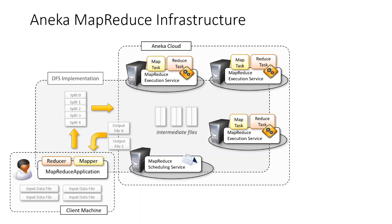The client component — namely the map reduce application — is used to submit the execution of a map reduce job, upload data files, and monitor it. The management of data files is transparent: local data files are automatically uploaded to Aneka, and output files are automatically downloaded to the client machine if requested. In the following, we introduce three major components and describe how they collaborate to execute map reduce jobs.